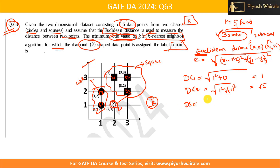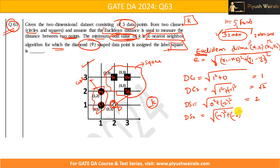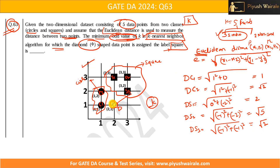Distance D to S2 = sqrt((2-3)² + (1-3)²) = sqrt(1 + 4) = sqrt(5) ≈ 2.24. Distance D to S3 = sqrt((2-3)² + (1-2)²) = sqrt(1 + 1) = sqrt(2) ≈ 1.41. So we now have the distances from the diamond to all five data points.